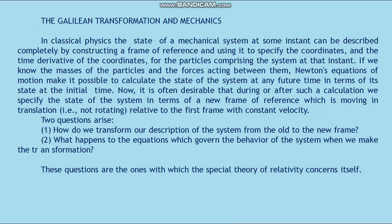The Galilean Transformation and Mechanics. In classical physics, the state of a mechanical system at some instant can be described completely by constructing a frame of reference and using it to specify the coordinates and the time derivative of the coordinates of the particles comprising the system at that instant. If you know the mass of the particles and the forces acting between them, Newton's equations of motion make it possible to calculate the state of the system at any future time in terms of its state at the initial time.